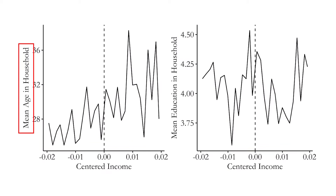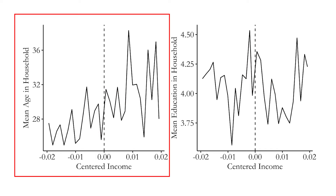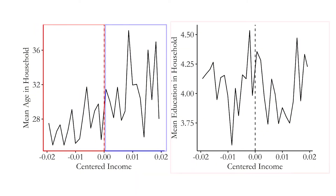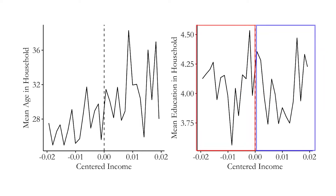How can we run this placebo test? We produce this exact same graph but use control variables as the dependent variable instead of the actual outcome. In particular, we use mean age in the household and mean education in the household — neither of which the government check should affect. In both cases, things look pretty good because we do not see a big jump right at the cutoff. Mean age in the household smoothly changes over the income distribution, with slightly higher ages for higher income households, which makes sense if you earn more as you get older. But there's no big jump at the cutoff. Similarly, mean education doesn't show much of a relationship with income in this narrow range, and there's no real jump at the cutoff either.